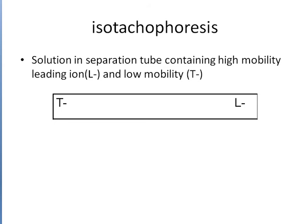In isotachophoresis, the solution in a tube contains a high mobility leading ion L and a low mobility trailing ion T. According to gradients, this separation works for similar particles like proteins, vitamins, minerals, carbohydrates, and some conditions like anemia. Some drugs and many other parameters can also be estimated using this instrument, based on mobility-driven migration of similar particles.